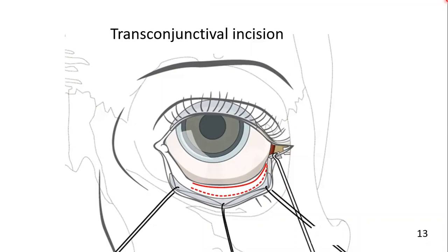The transconjunctival incision is performed in a lateral to medial direction. It can be performed preseptally or retroseptally. The lower eyelid is everted to identify the position of the lower tarsal plate through the conjunctiva. The conjunctiva is incised immediately along the inferior margin of the tarsus to enter the preseptal plane — shown as the dotted line — or at the base of the fornix for the retroseptal approach, shown as the solid line.